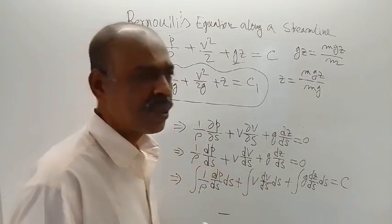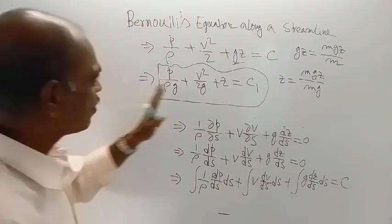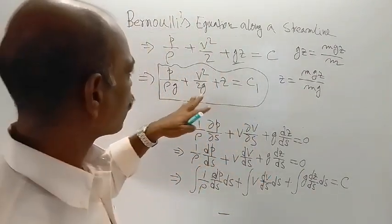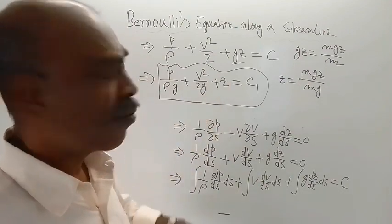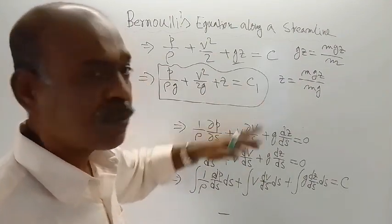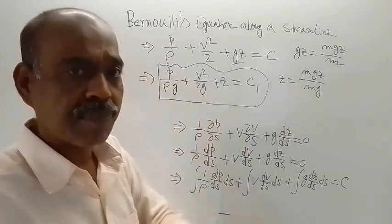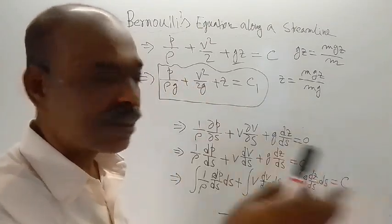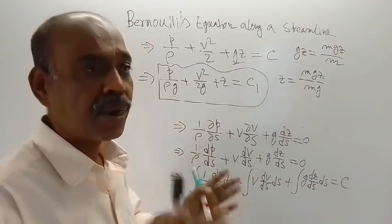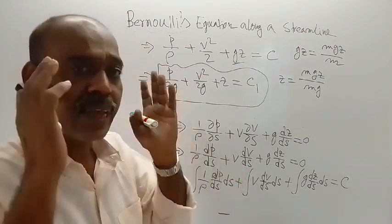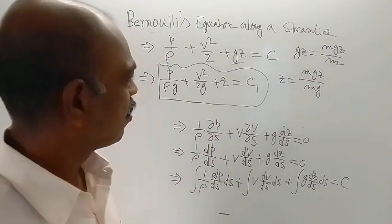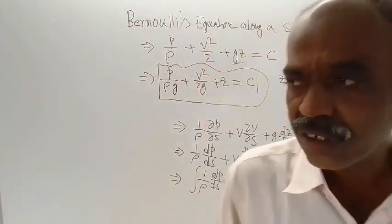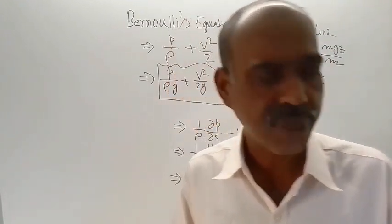This is the end of this lecture. This is Bernoulli's equation along a streamline. For any given streamline, the value of the constant remains the same all along the length of that streamline. But if you change the streamline, then that constant value will be different. Thank you for watching this video. Have a beautiful day.